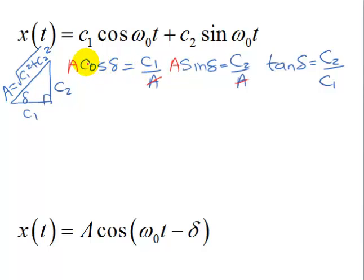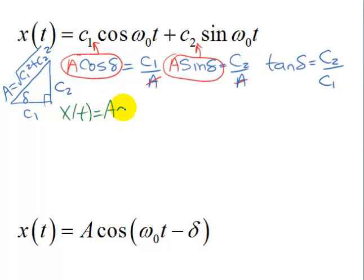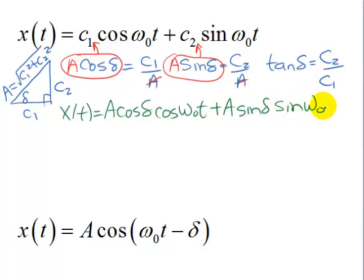Now I have C1 equal A cosine delta and I can substitute that for C1 here. And I have C2 equal A sine delta that I can substitute right here. So what I now have is X of t equals A cosine delta cosine omega naught t plus A sine delta sine omega naught t.